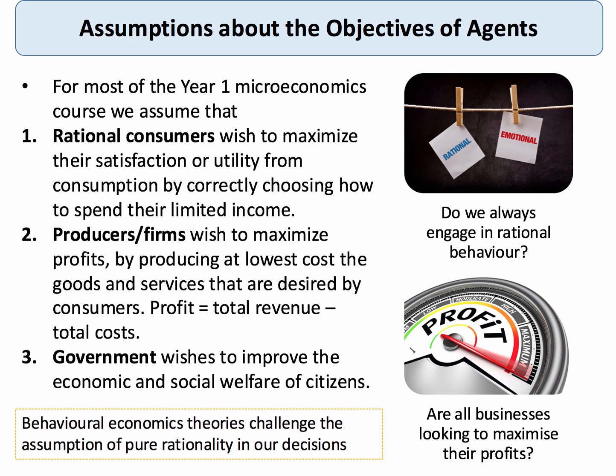Producers and firms, on the other hand — suppliers — they want to maximise their profits. They try to do that by producing at the lowest unit cost and by selling at the highest price the market can bear. Governments may also act in a kind of social, rational way, by trying to introduce policies which maximise or improve the economic and social welfare of citizens.